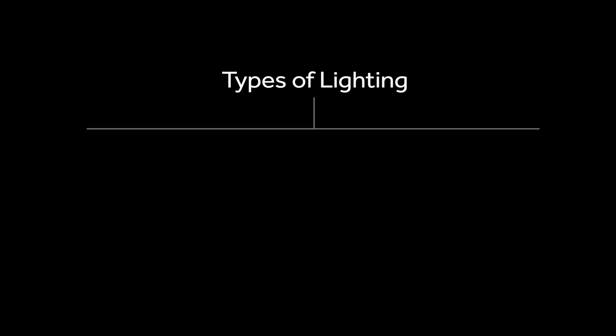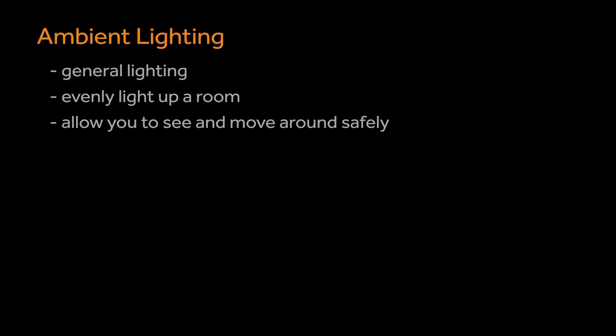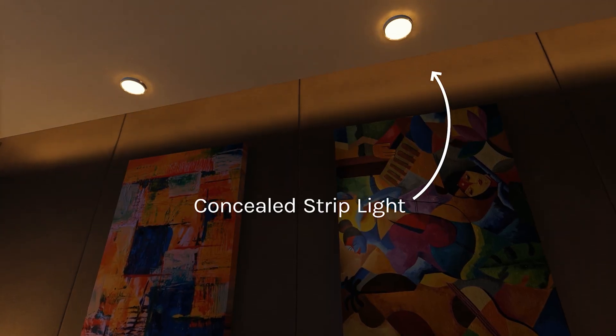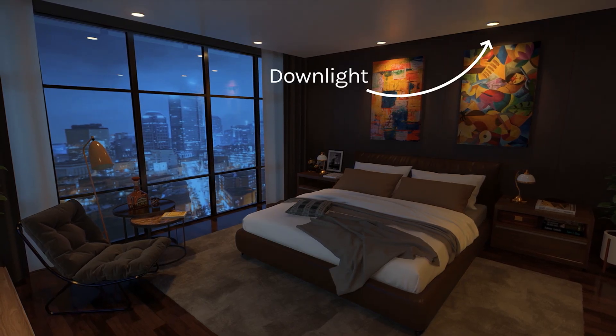First of all, we need to know about interior light sources. We can divide them into five different types. Ambient light is a kind of general light which evenly lights up the room. It also allows you to see and move around safely. In this room, the strip light and the down light function as ambient lights.